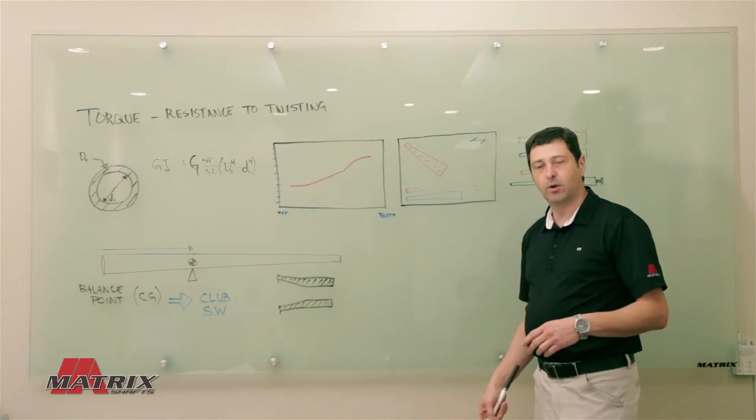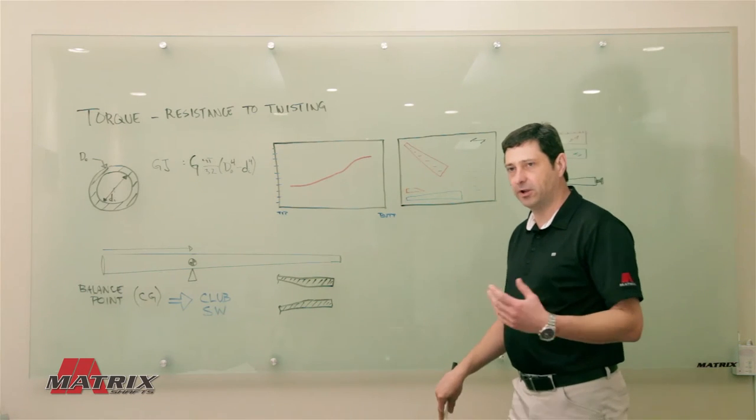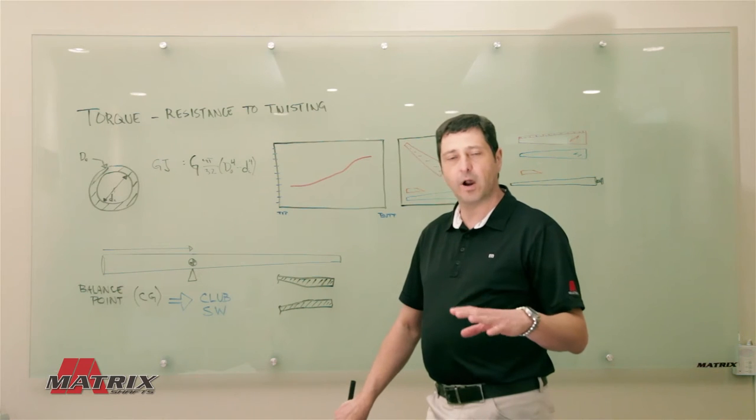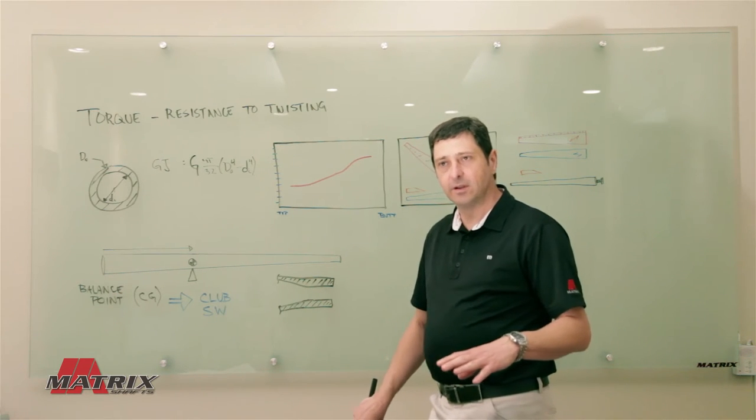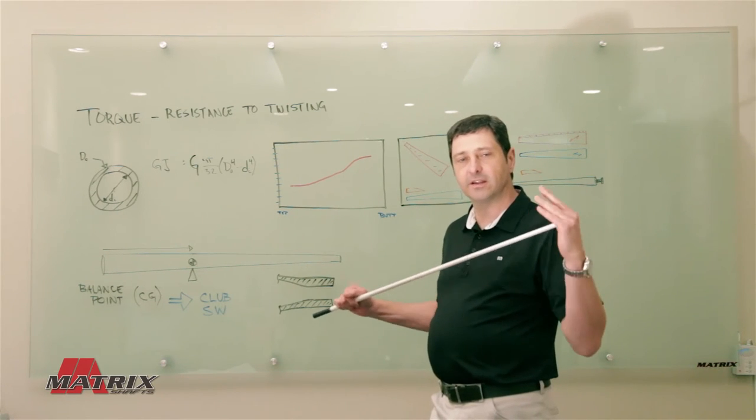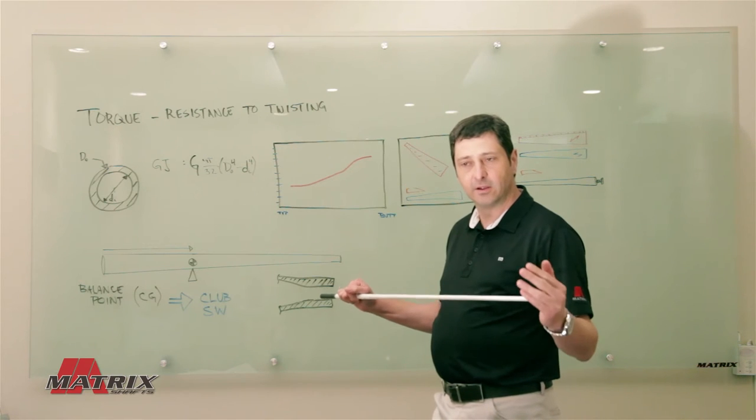So how does a player perceive that? A player perceives a low torque shaft probably as being a stiffer shaft because it may feel more harsh to them because the head is not going to rotate as much before it transmits some of that feeling up to their hands.